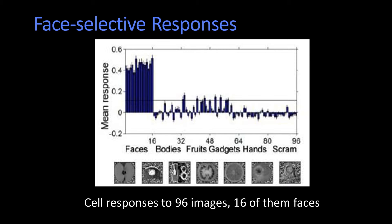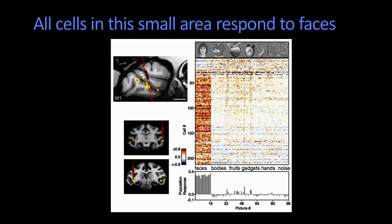Likewise, there were responses of cells in various areas — this is a cell recording — that respond when shown faces, and don't respond when shown other things like fruits, hands, et cetera. And likewise, there are measurements using fMRI of areas that respond to faces.